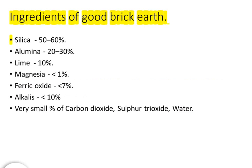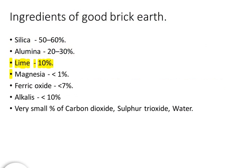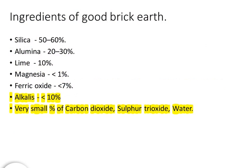Ingredients of good brick earth: Silica 50-60%, Alumina 20-30%, Lime 10%, Magnesia 1%, Ferric oxide 7%, Alkalies 10%, and very small percentages of carbon dioxide, sulfur trioxide, and water.